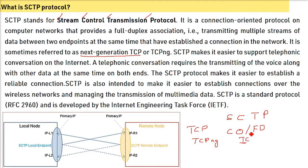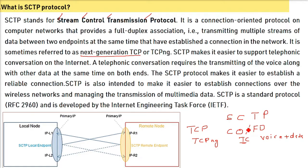SCTP makes it easier to support telephonic conversation on the internet. A telephonic conversation requires the transmission of voice along with data at the same time on both ends. SCTP is also intended to make it easier to establish connections over wireless networks and managing the transmission of multimedia data.